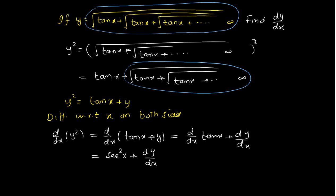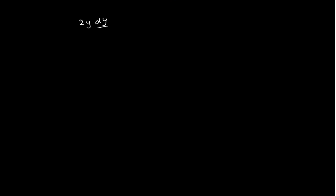The derivative of y squared is 2y times dy by dx on the left-hand side. The derivative of 10x gives a constant coefficient, and dy by dx on the right. So therefore, 2y dy by dx equals 10 plus dy by dx. Now collect the terms containing dy by dx.